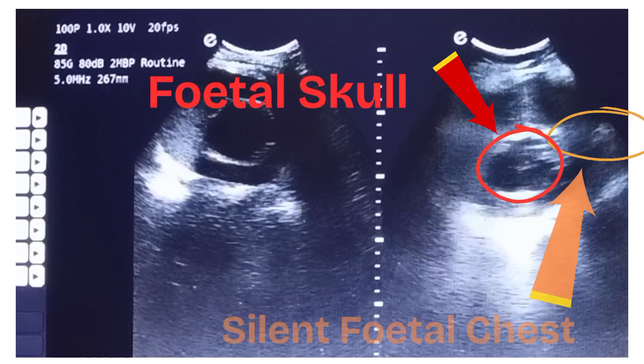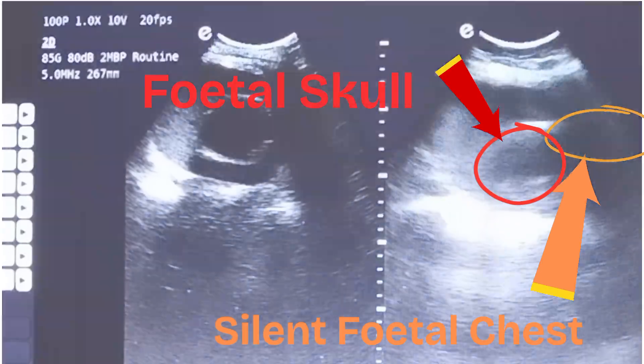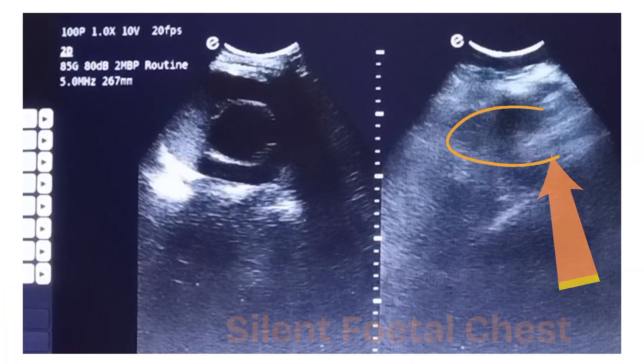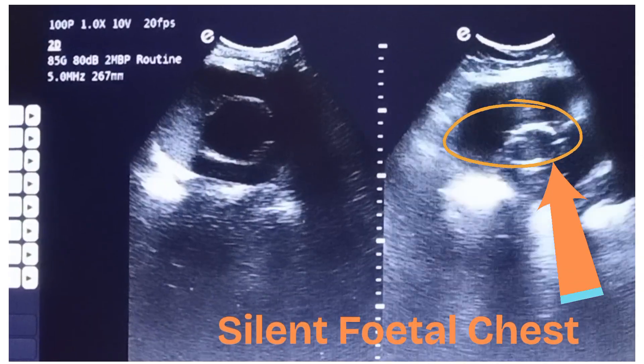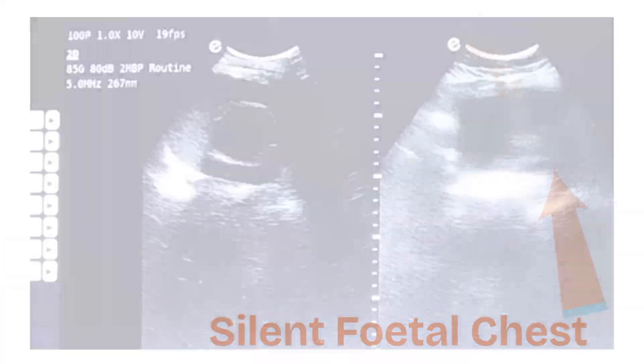Here the yellow circle shows the fetal chest, and the fetal head can be seen inside the red circle.